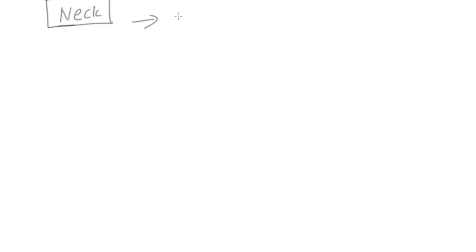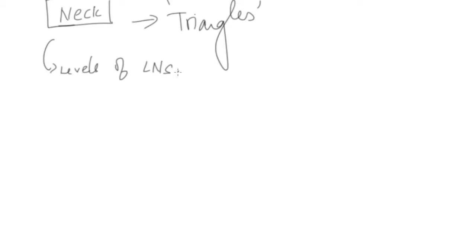When you talk about the neck, you are very familiar with the triangles of the neck — the anterior triangle, the lateral, and the posterior triangles. Today we will see the levels of the lymph nodes. This is important from a surgical point of view. A lot of MCQs are framed around this, and clinically when a patient comes with an oral malignancy or anterior neck swelling, you need to check the draining lymph node regions — which level is involved, how far the disease has progressed, and what further management steps are needed.